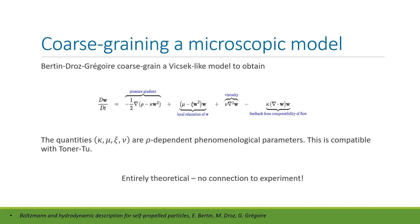This is an entirely theoretical result — they took an agent-based model, coarse-grained it, and arrived at some result, but there's no connection to experiments. This is where we're at now: determining these phenomenological parameters is where my project is heading. As a first stab we'll look at constant parameters and see if we can model behavior correctly with that.